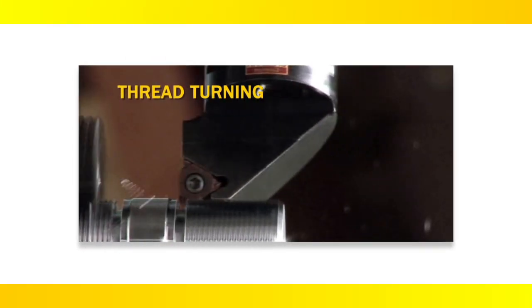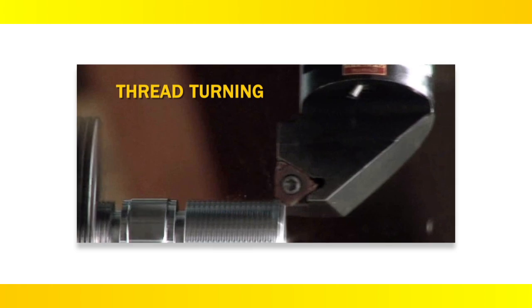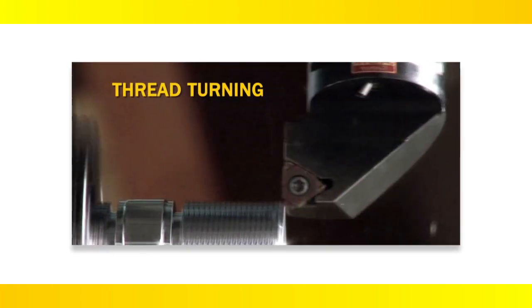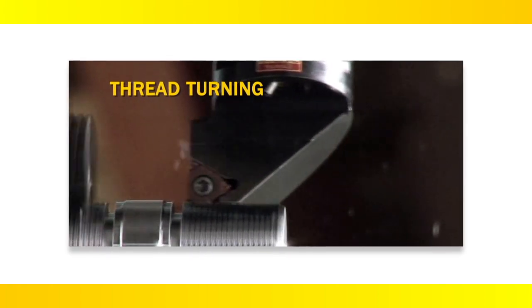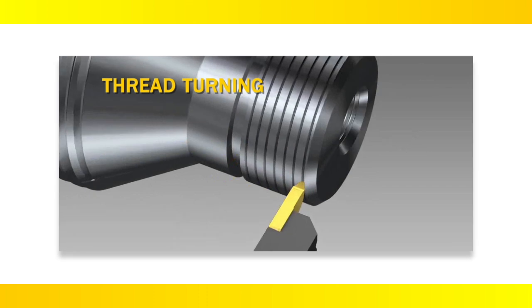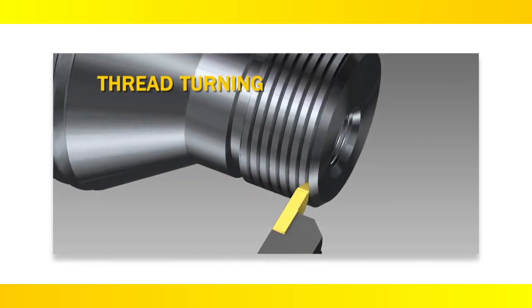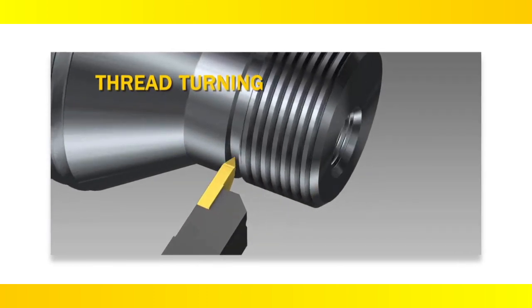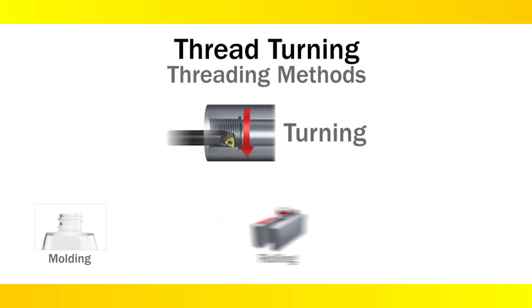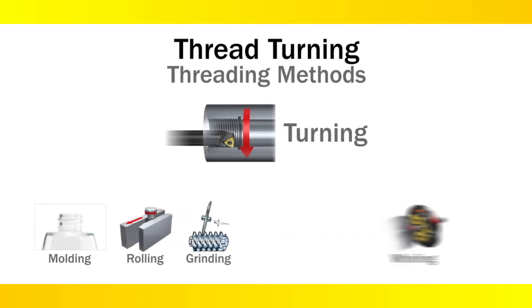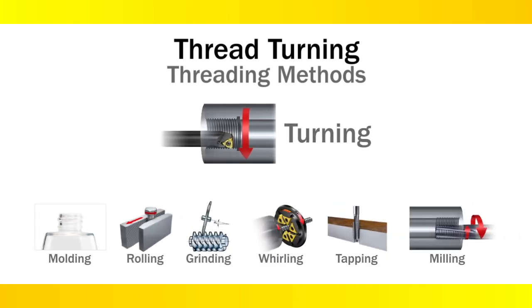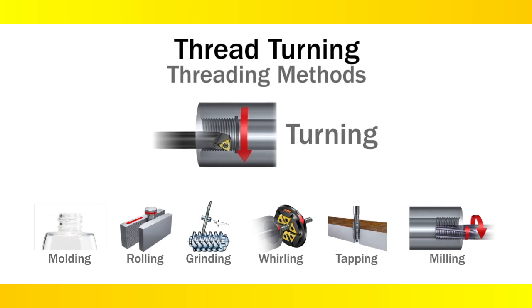Thread turning is an established and widely used threading technique for the threading of parts. It is used across multiple industries and can be used for internal, external, and tapered threads. Thread turning is commonly the first choice technique for threading rotational parts because of its high productivity and surface finish compared to other techniques shown here.